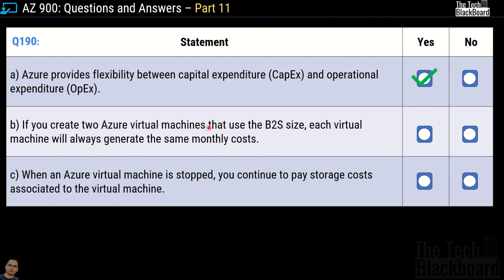Statement 2: if you create two Azure virtual machines using B2S size, each will always generate the same monthly cost — the answer is no. Two VMs with the same size can still have different disk configurations or other attached resources priced differently across geographical locations, resulting in different costs. Statement 3: when an Azure virtual machine is stopped, you still continue to pay storage costs associated with it — this is true. Even when stopped, you pay for disk storage, diagnostics data storage, and VM backups. Always shut down VMs when done with them.